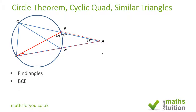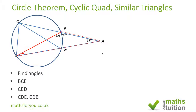We need to find angle BCE, which is this angle here, and then angle CBD, which is again this angle here. Then the last two angles we need to find are CDE, which is all of that, and CDB, which is just that one there.